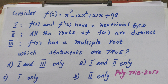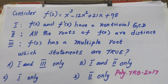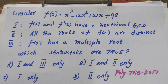The second statement says all the roots of f of x are distinct, that is different. The third statement says f of x has a multiple root. Which of these statements are true? The options are: 1 and 3, 1 and 2, 1 only, or 2 only.